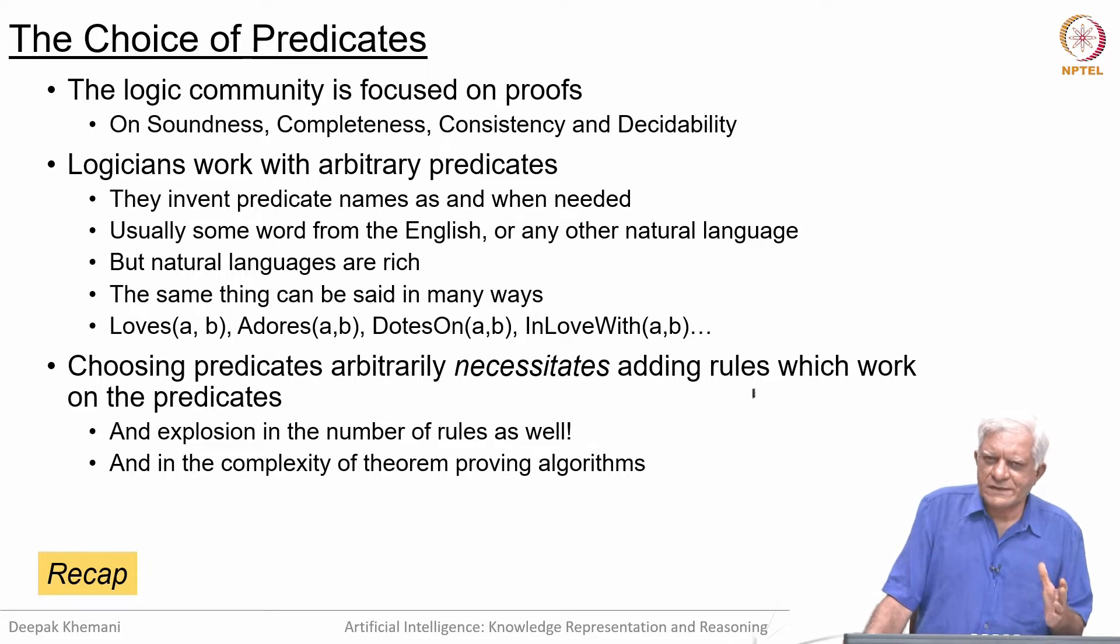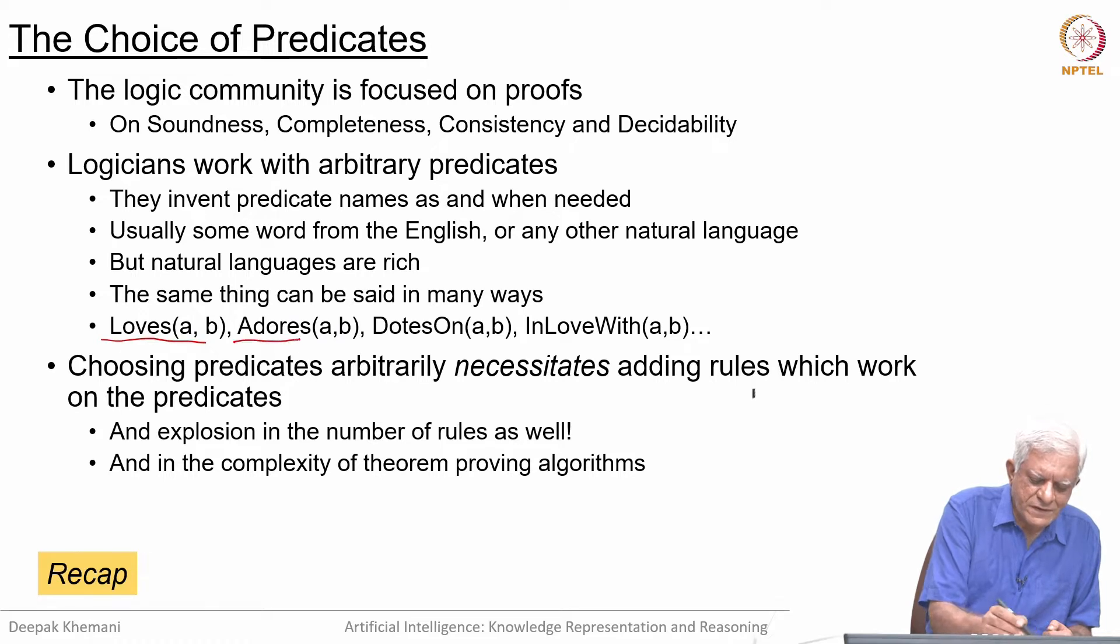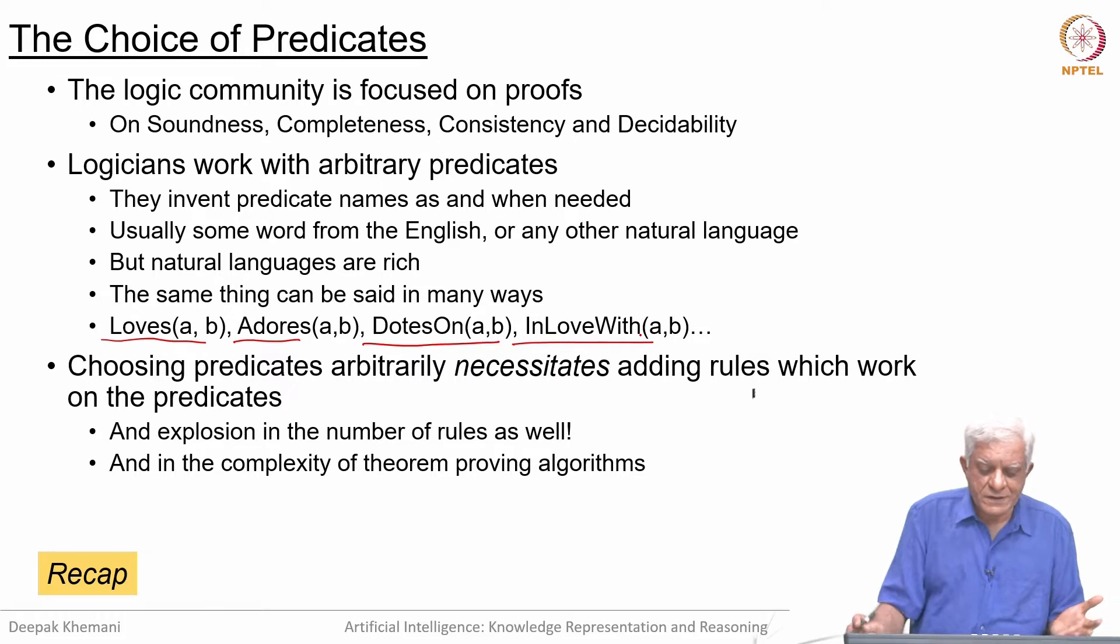We do not want to simply borrow predicates from natural language because, as we have discussed earlier, you can say the same thing using different predicates: loves, adores, dotes on, is in love with, and so on. We do not want to have too many predicates because that would mean having rules for every such representation.